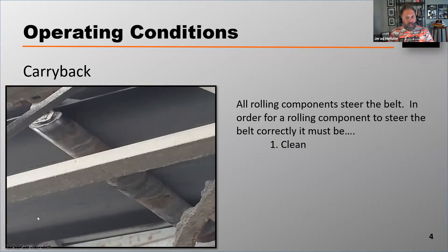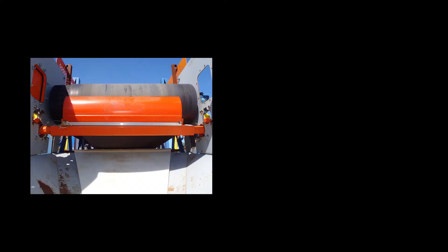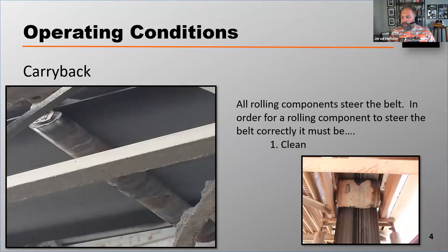You want to make sure that those belt scrapers are maintained and tensioned properly. We're always going to recommend a multiple belt cleaning system, which would consist of a primary cleaner with typically a urethane blade, and then a secondary cleaner which definitely should be made of tungsten carbide. Bend pulleys, take-up pulleys, carrying idlers, and return rollers — they all must be clean and can't be built up with material.